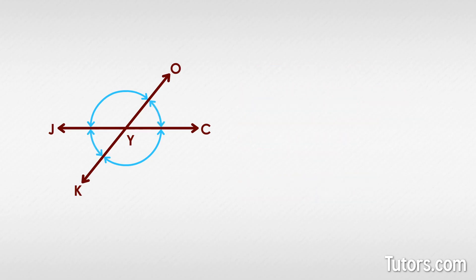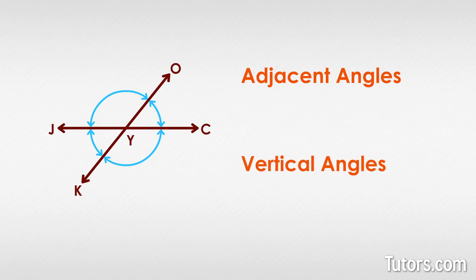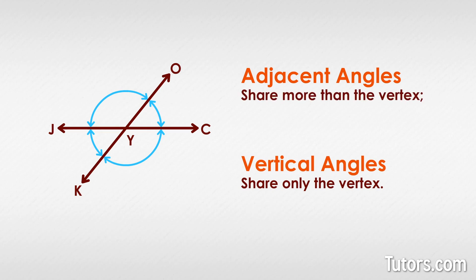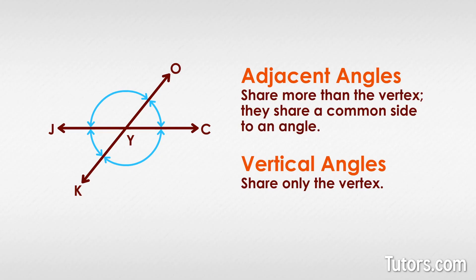You may wonder why adjacent angles are not also vertical angles, since they share the vertex too. Adjacent angles share more than the vertex — they share a common side to an angle.